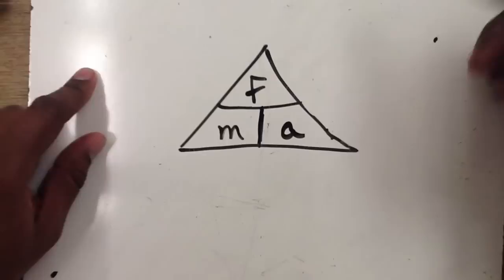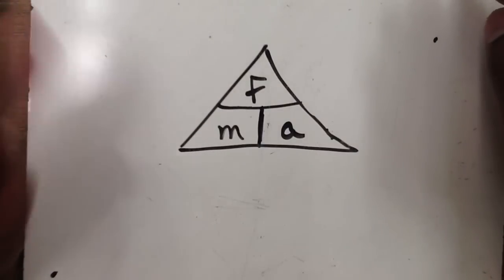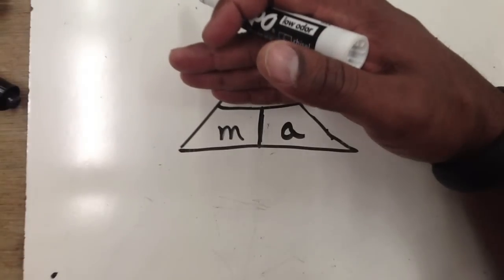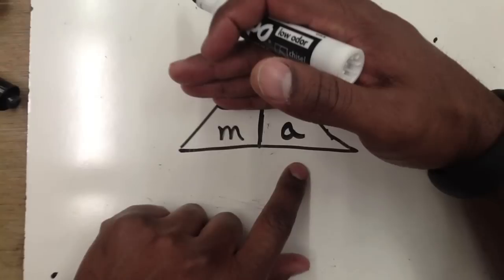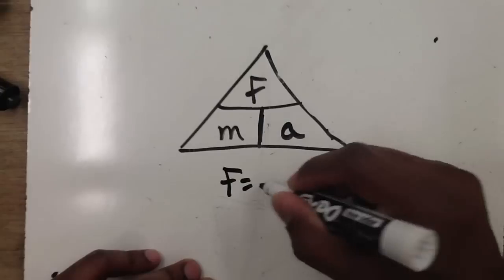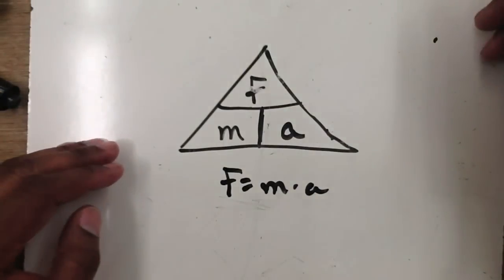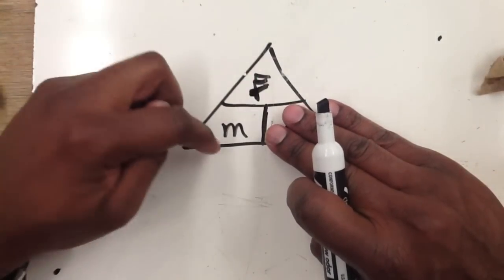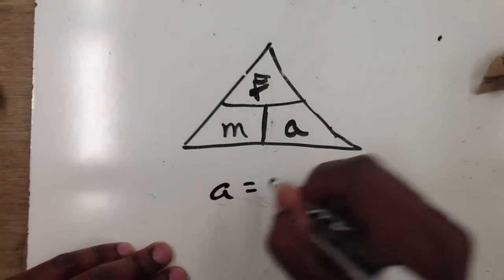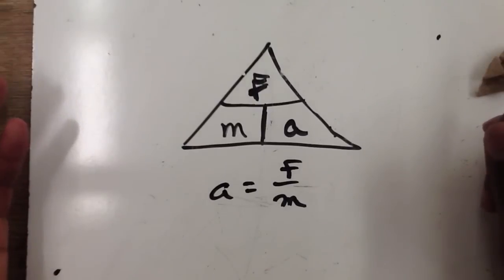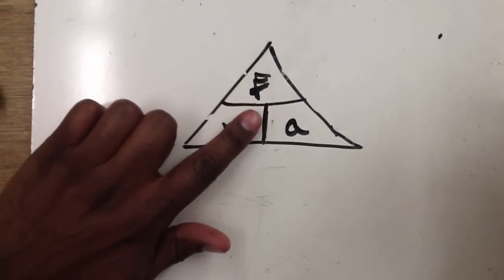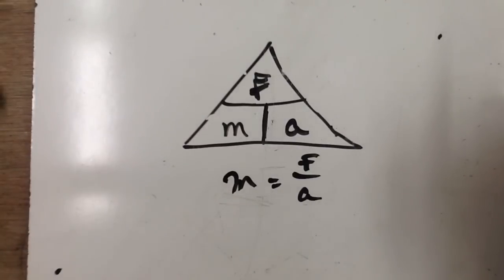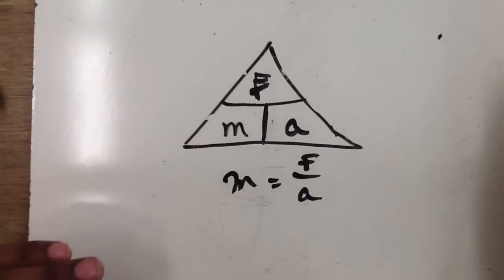The way you use this triangle is you simply cover up what you're looking for, and it gives you the formula. If you're looking for force, cover up F — you see m and a next to each other, meaning multiplication, so force equals mass times acceleration. If you're looking for acceleration, cover up A — you see F over m, meaning division, so acceleration equals force divided by mass. And if you're looking for mass, cover up M — that gives you F over a, so mass equals force divided by acceleration. Draw this triangle on your papers to help you remember.